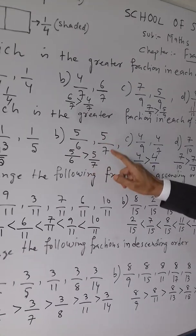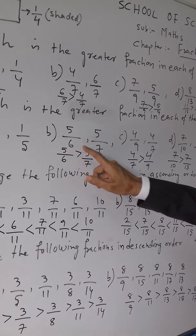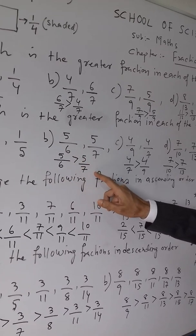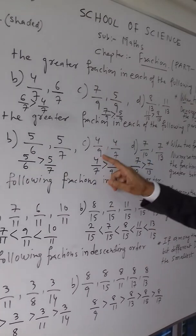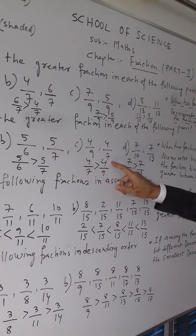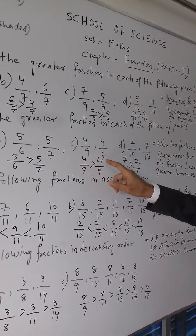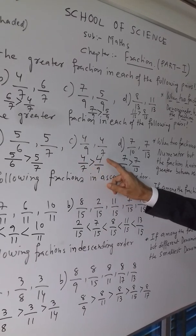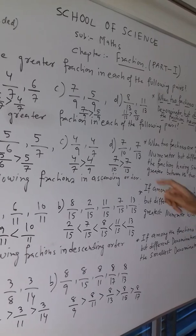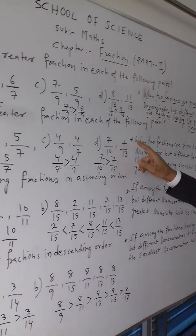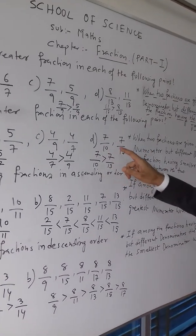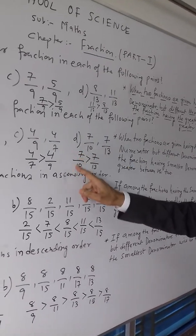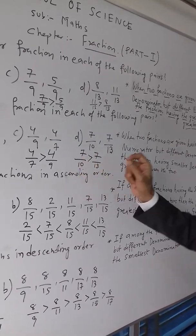5 by 6 and 5 by 7: 6 is less than 7, so 5 by 6 is greater than 5 by 7. For 4 by 9 and 4 by 7: comparing 9 and 7, since 7 is smaller, 4 by 7 is greater than 4 by 9. For 7 by 10 and 7 by 13: 10 is less than 13, so 7 by 10 is greater than 7 by 13.